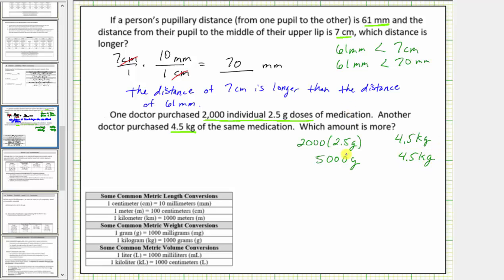Therefore, we need to convert five thousand grams to kilograms or four point five kilograms to grams. For this example, we will convert five thousand grams to kilograms using a unit fraction. Beginning with five thousand grams as a fraction with a denominator of one, we multiply by a unit fraction that will convert grams to kilograms. Looking at the conversions, one kilogram is equal to one thousand grams. We will use this conversion to form the unit fraction. We want grams to simplify out of this product, so grams must be in the denominator of the unit fraction, leaving kilograms for the numerator. Therefore, the unit fraction is one kilogram divided by one thousand grams.